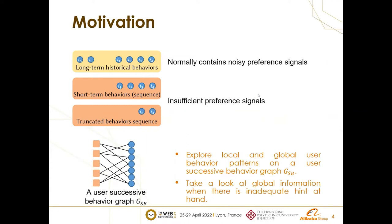One of the most popular interactions we use is user behaviors, and one of the most common ways to represent users is to compose the user with the products they have visited. Some works use long-term historical behaviors and some others use short-term behavior sequences. Both of them, however, have problems. Long-term historical user behaviors can form comprehensive user representations but normally contain noisy preference signals. On the other hand, short-term behavior methods help eliminate noise but may contain insufficient preference signals, and in practice many sequences are truncated for computational efficiency.